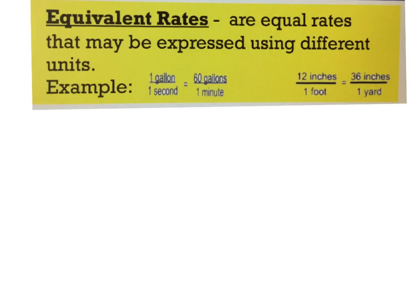The definition of an equivalent rate is two rates that might be expressed using different units. Another word for equivalent is equal. So basically they are two equal rates, but they're just expressed in a different way — kind of like equal fractions, except this one uses different units.